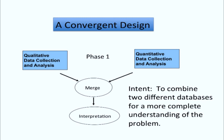Let's first start with the convergent design. This is a very simple graphic of how the design sets up. We're going to collect qualitative data and analyze it, and quantitative data and analyze it, and then compare the two results. We're going to merge these two databases and then make an interpretation. The whole intent of this design is to capture two different perspectives on a problem — one based on a survey or questionnaire, and the second on individual interviews — so those personal views are compared with the more statistical quantitative views.